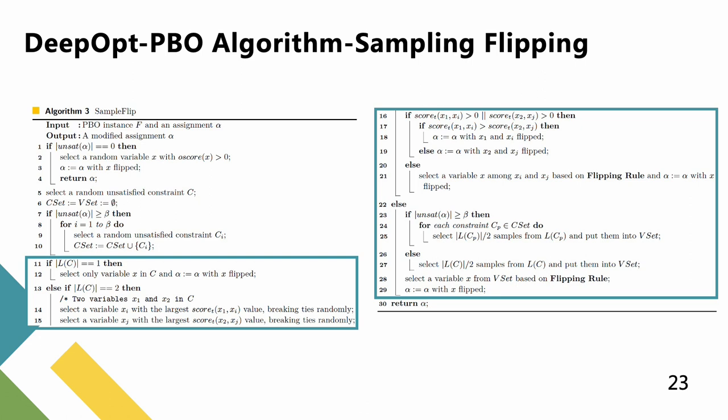If there exists a positive flipping operation among these two pairs, the algorithm flips a pair with the better score-T value. Otherwise, the algorithm still flips the only one variable among x1 and x2 based on the flipping rule.